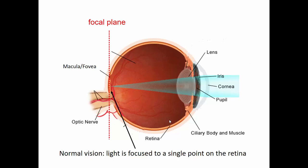When cells in the retina get excited, they start to send action potentials down their axons, and those axons all leave the eye through the optic nerve. We call the point where light comes to a single point after it's bent the focal plane. To see things clearly, the focal plane should be exactly at the point of the back of the eyeball, right on the retina.